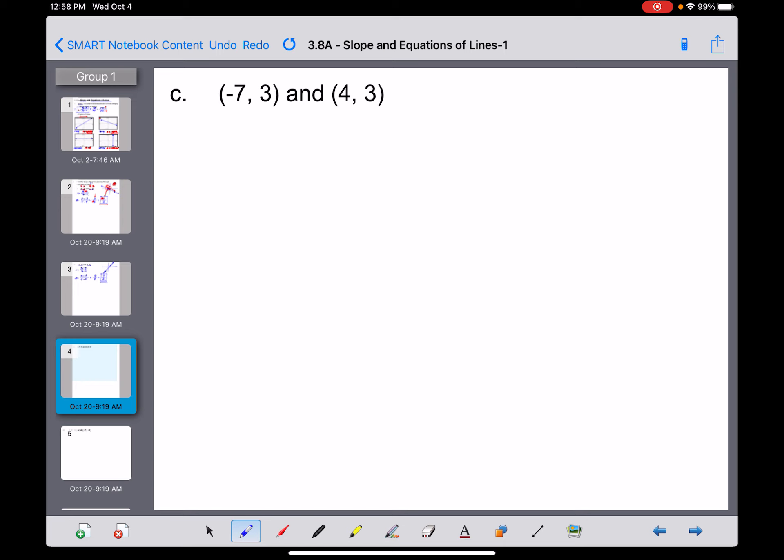Let's take a look at a third example. Now, again, I would encourage you to pause the video and try this one on your own. Something interesting happens here. So m is equal to y2 minus y1 over x2 minus x1. So out of these four numbers here, y2, the second y-coordinate, is 3. Minus y1, the first y-coordinate, which is also 3. All over x2, the second x-coordinate, is 4, and then minus x1, which is -7. So we'll make that a plus. And when we go to simplify, something interesting happens. This is now 0 all divided by 11.